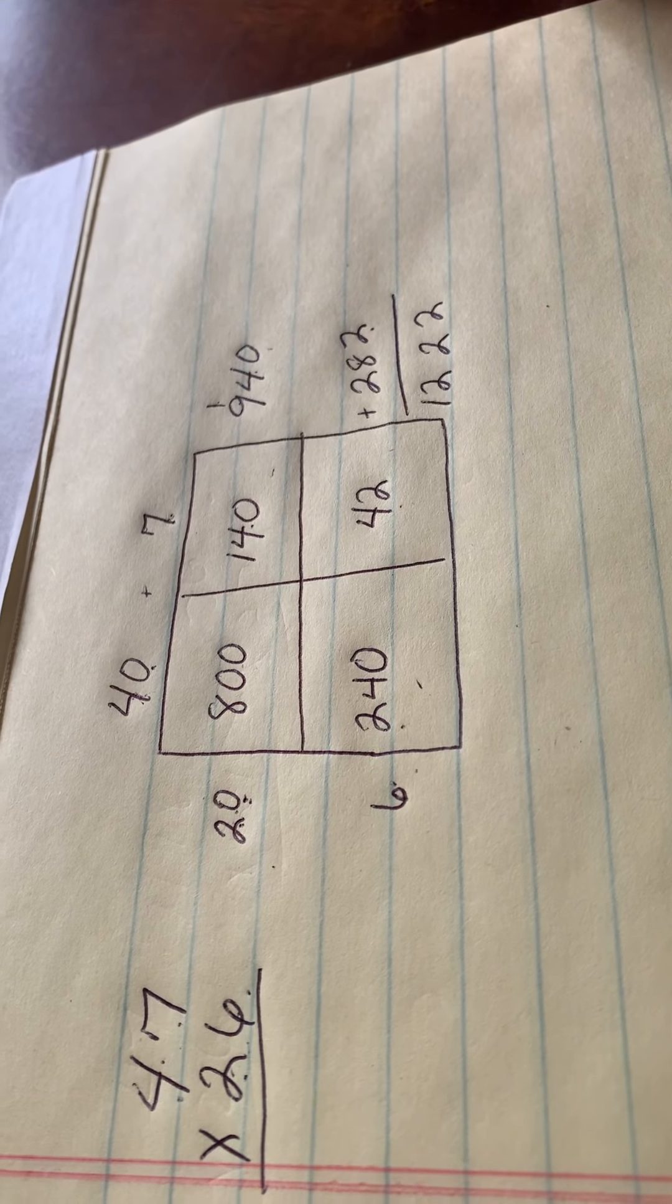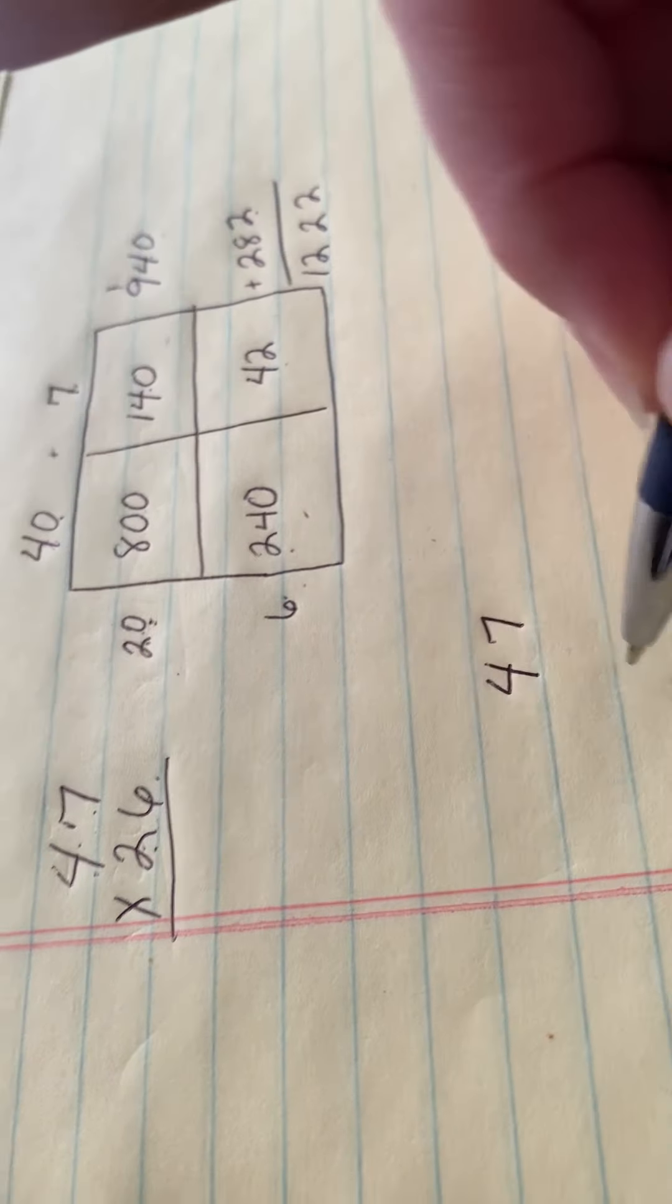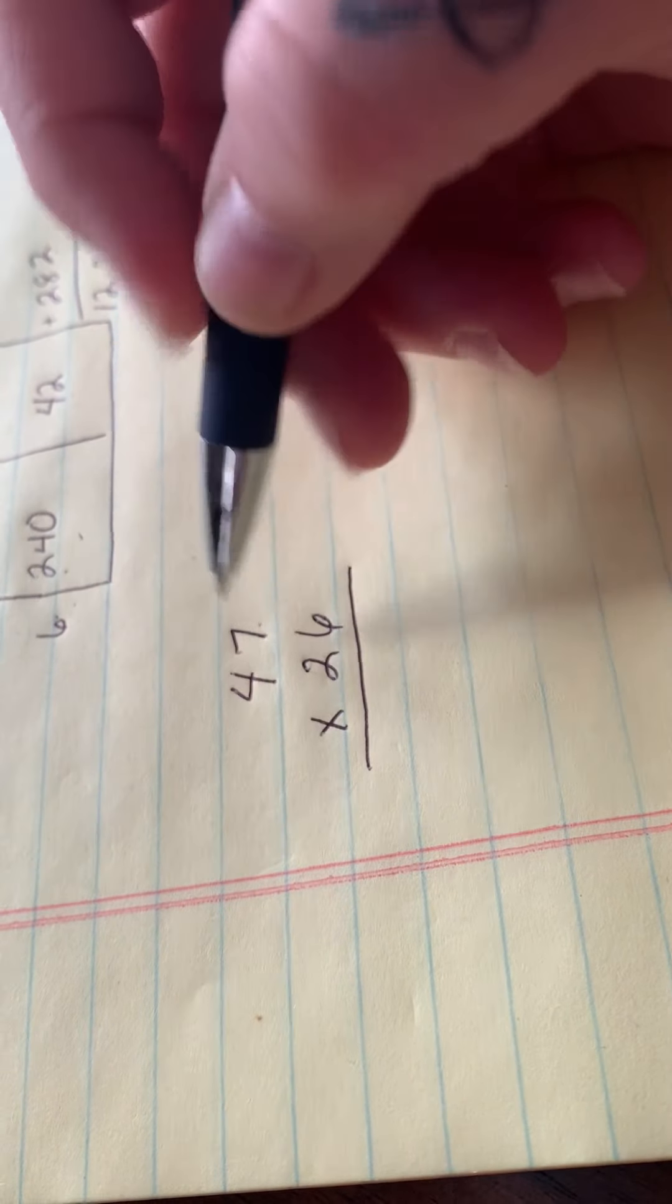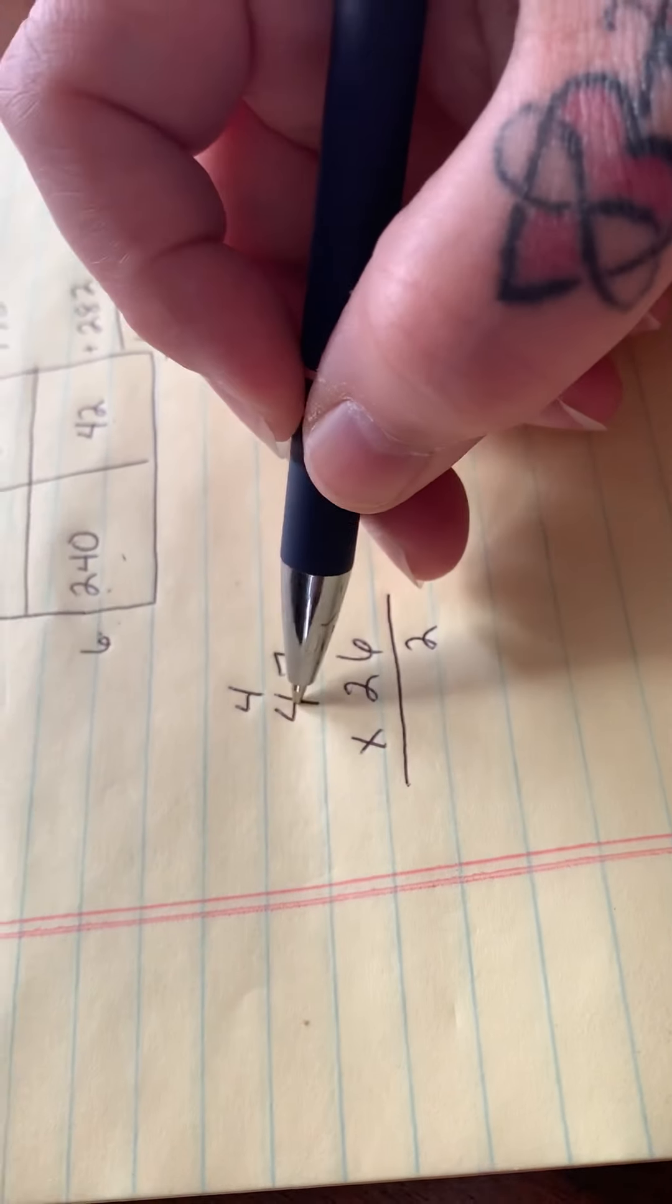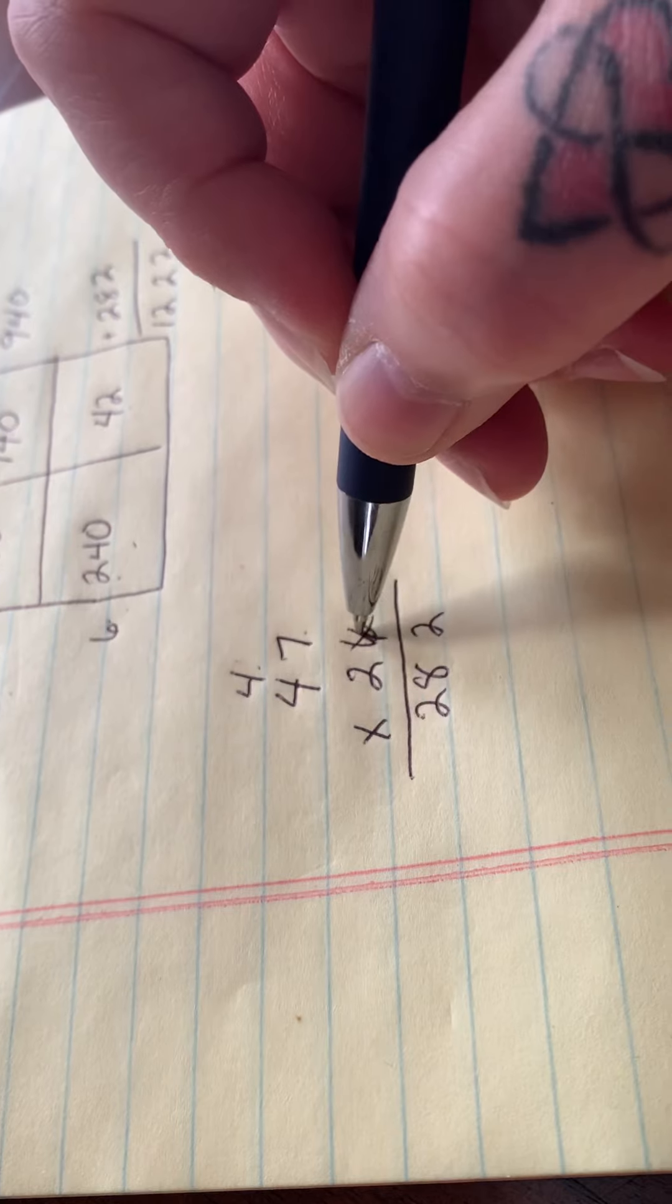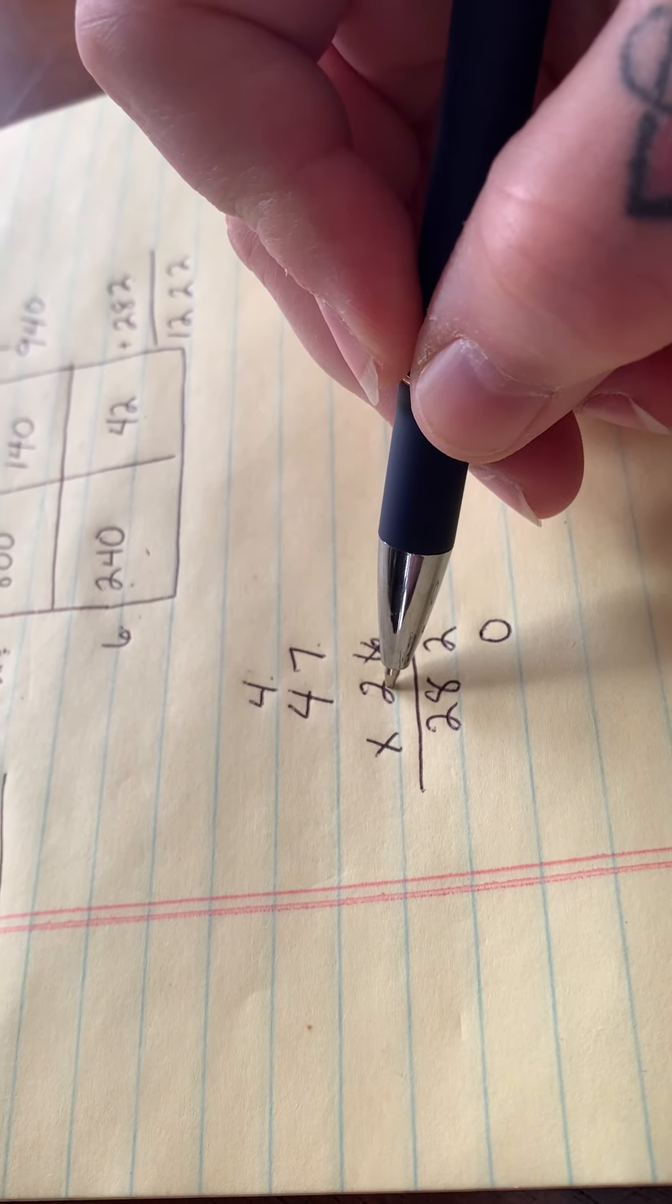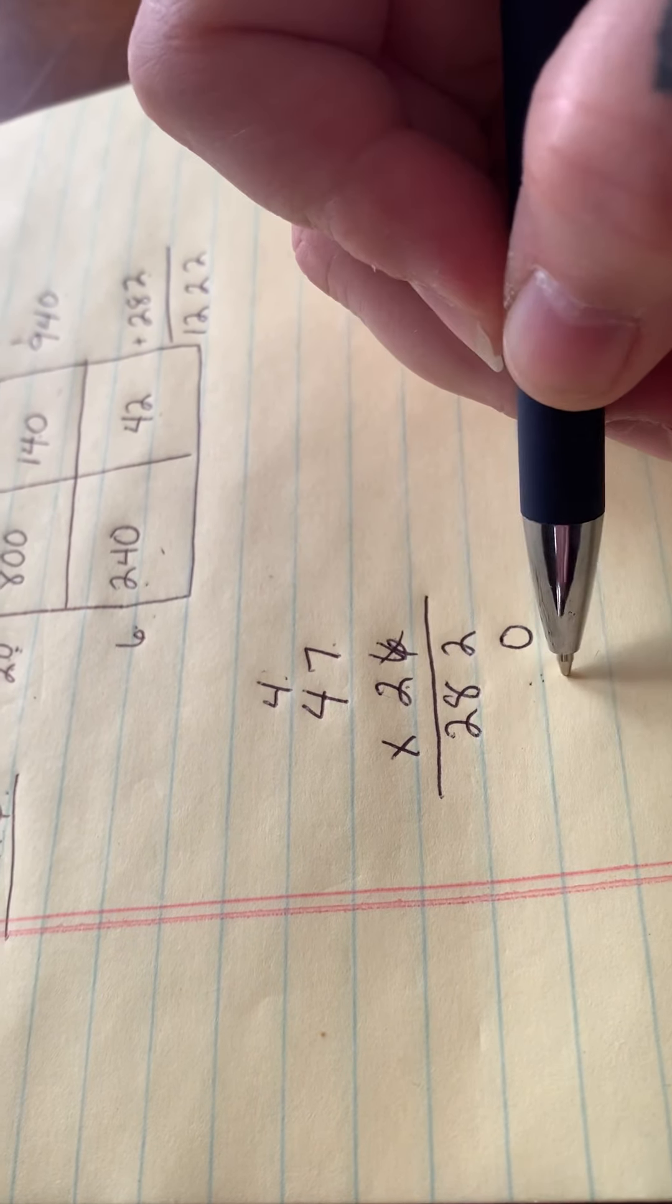Now let's see if we get that when we do it the traditional way. Let's move it down here. 47 times 26. 6 times 7 is 42, carry your 4. 6 times 4 is 24 plus 4, 28. Now we don't need that one's place anymore. So let's put our 0 in its holding place because we're going to start with the tens place.